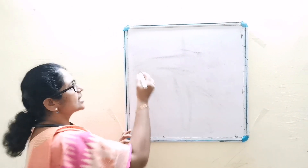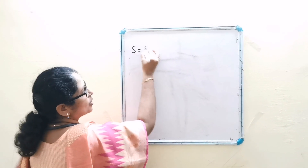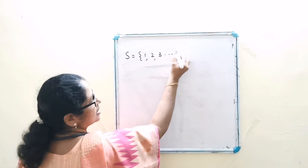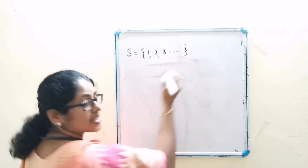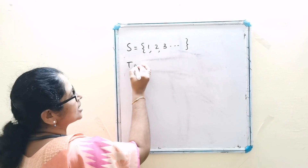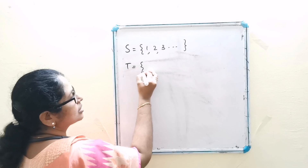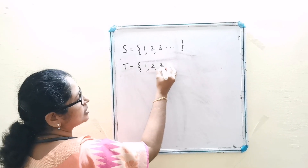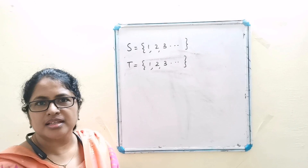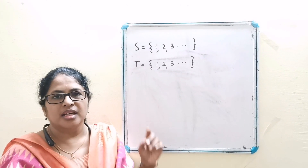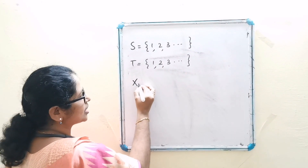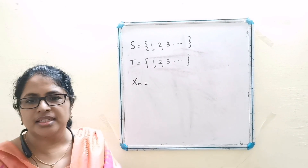We know the state space S is equal to {1, 2, 3, ...} and the time space T is equal to {1, 2, 3, ...}. Here, given that Xn is equal to the maximum of the numbers occurring in the first n trials.